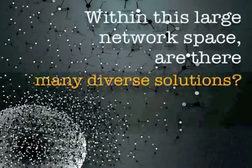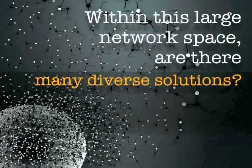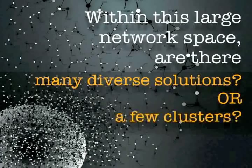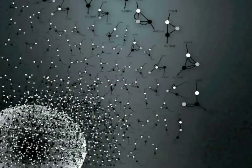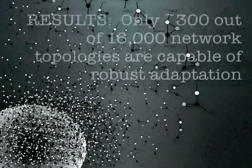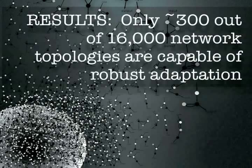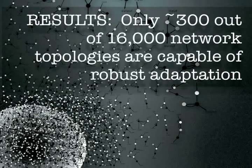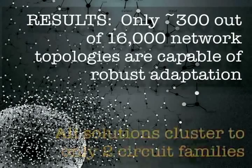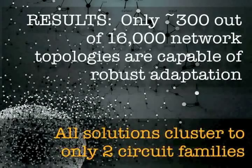In this huge space of circuits, are there many unrelated circuits that can achieve adaptation, or are there really just a limited set that can do this? What we found is that of the 16,000 possible networks, only about 300 are capable of robustly performing adaptation — that is to say, they can achieve this behavior with diverse parameter values. Moreover, we find that all of these 300 solutions cluster to just two major circuit families.